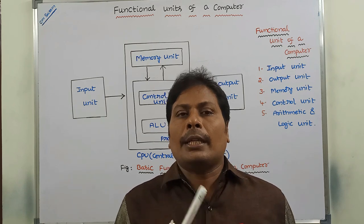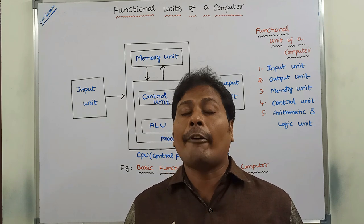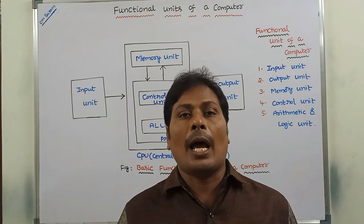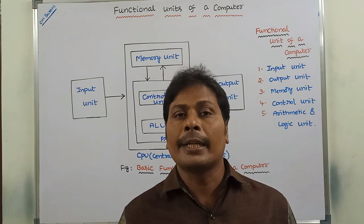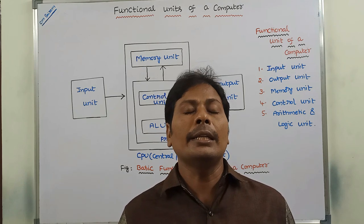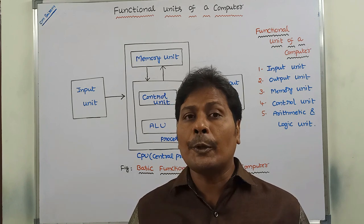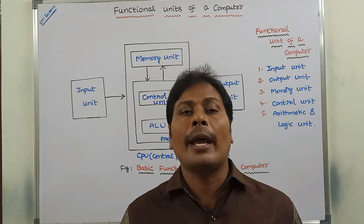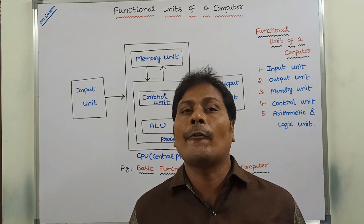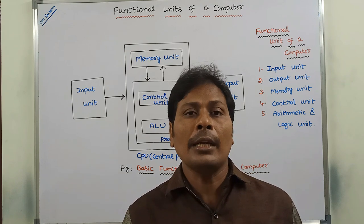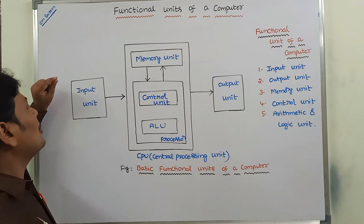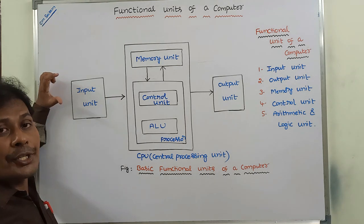A digital computer generally consists of five functional units. The first one is input unit, second one is output unit, the third one is memory unit, fourth one is control unit, and fifth one is arithmetic and logic unit. These five units can be collectively called as a digital computer. A digital computer mainly consists of these five basic functional units that are shown in this diagram.